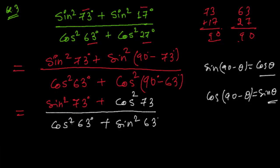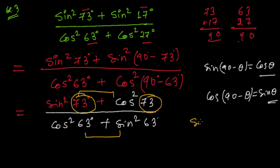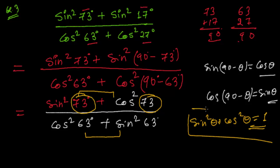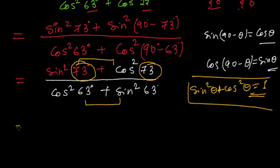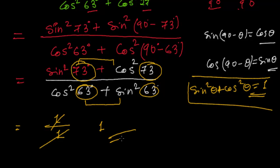Now we recognize that sin²θ + cos²θ = 1, the first Pythagorean identity we proved in the previous video. With θ = 73°, the numerator equals 1. Similarly, cos²63° + sin²63° = 1, so the denominator also equals 1. The answer is 1 over 1, which is 1.